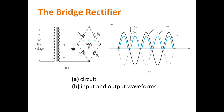Next is the bridge rectifier. The circuit uses four diodes and produces the same full-wave rectifier output waveform, shown in figure B. The only difference from the center-tap secondary rectifier is that there is no center tap; instead, four diodes are used. During the positive half-cycle, two diodes conduct, and during the negative half-cycle, the remaining two diodes conduct.